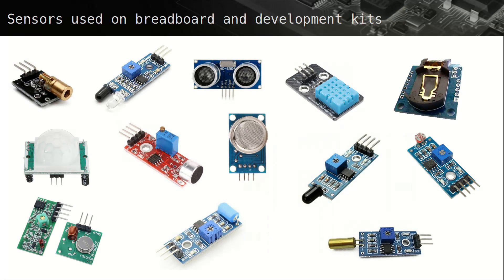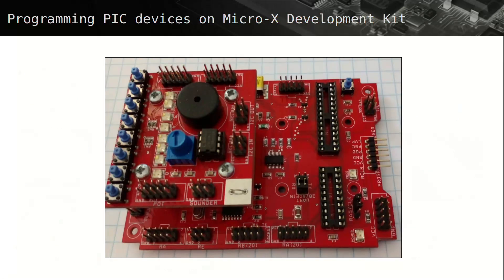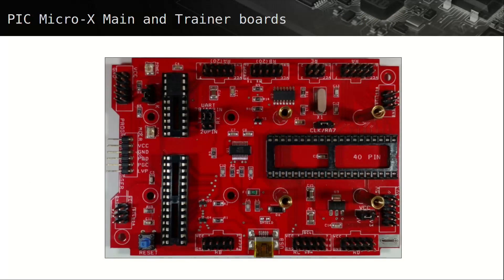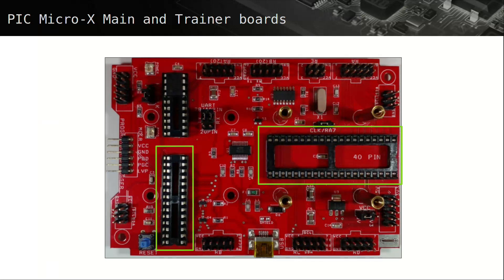Various sensors are used with the breadboard tutorials, as well as with the Micro X and Curiosity Nano development series. The PIC Micro X development series offers a great platform to expand on. This kit has a lower main board and a trainer board mounted above. The main board has three sockets available to program PIC devices: the 40 pin socket, the 28 pin socket, and the 20 pin socket for 20, 14 and 8 pin PICs.